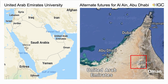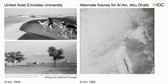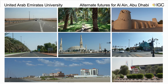Al Ain is the largest inland UAE city, located along the boundaries of Oman. It is a desert city. Historically, back in the 1960s, it was nothing — just an oasis with a few scattered plantations. The lifestyle at that time involved people using camels to transport themselves.